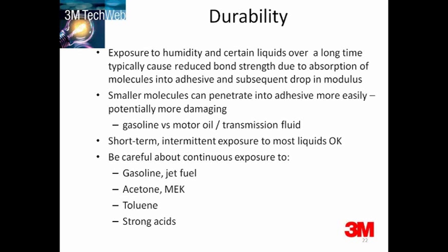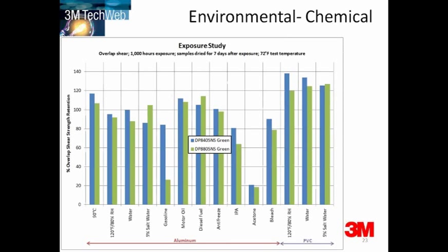Exposure to humidity and certain liquids over a long time will cause a reduction in bond strength. This is due to absorption of molecules into the adhesive and a subsequent drop in modulus. Certain liquids are more dangerous than others — typical engine oils and fuels are typical things to be concerned about. By understanding this, you can design for it from the beginning. This slide shows the effects of 1,000 hours of continuous immersion of different fluids on the bond strength of single lap shear joints.